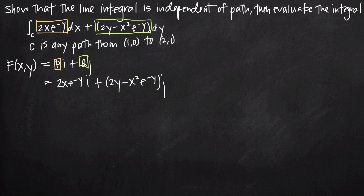To determine whether or not the vector field is open and simply connected, we look at our functions p and q. We're looking to see whether there are any points at which p and q are undefined — values under a square root that could go negative, denominators that could be zero, or natural logs with zero or negative arguments. Here, p and q have no such issues. There are no values we could plug in for x and y that will make p and q undefined — these are simple polynomial-type functions defined everywhere in the entire plane R squared. So F is open and simply connected.